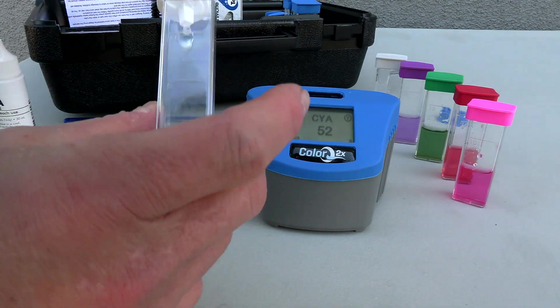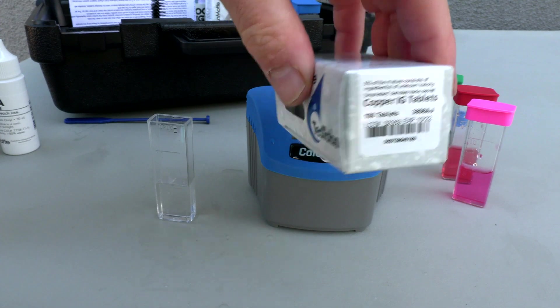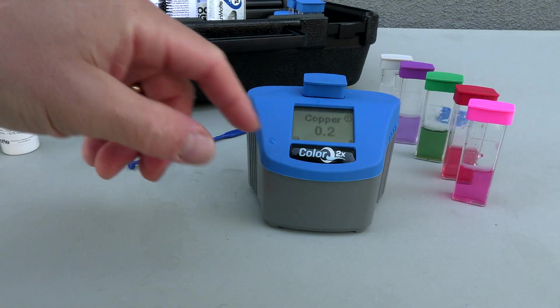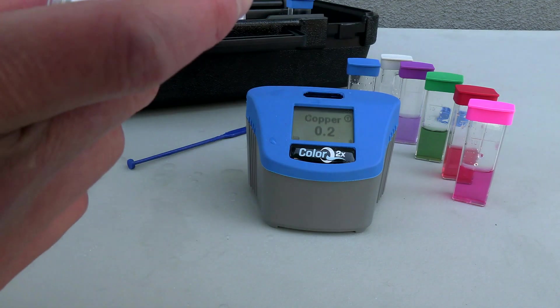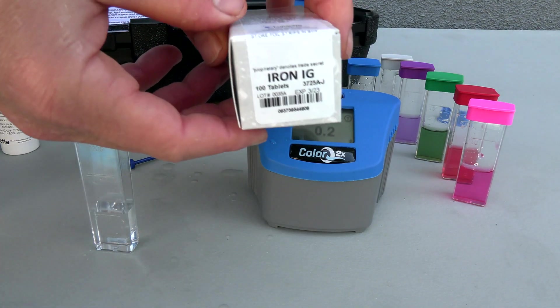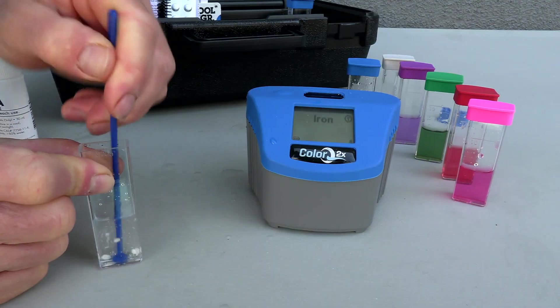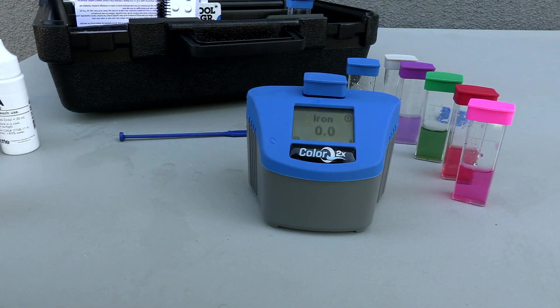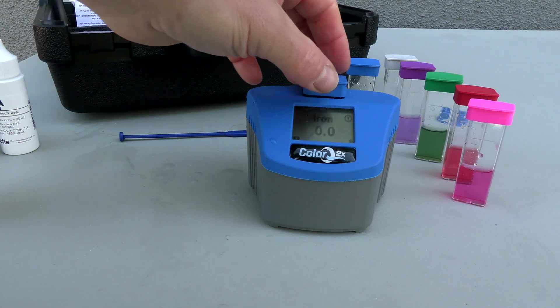Now I'm going to do the copper test. I'll use the copper test tab. Should be at zero in most cases. This one's showing a little bit of copper in the water. I'm going to test for iron and I'll be using the iron test tabs. It's showing zero parts per million of iron in the pool.